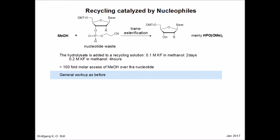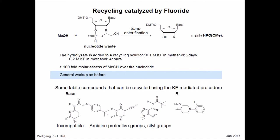Another recycling process uses methanolic potassium fluoride as a general base. As you can see on this slide, the concentration of base has a profound impact on the rate. There may also be a nucleophilic assistance by fluoride ions. This transesterification process has been found to be compatible with acyl protective groups for bases and also acetyl protective groups. It is incompatible with amidines and also silyl groups, particularly if the silyl groups are positioned on the 2'-hydroxy function of ribonucleoside building materials. In the latter case, the silyl groups may migrate and the product will not be useful.